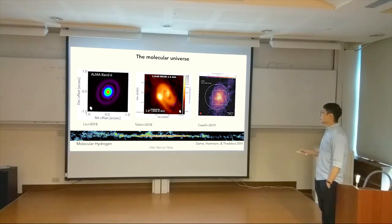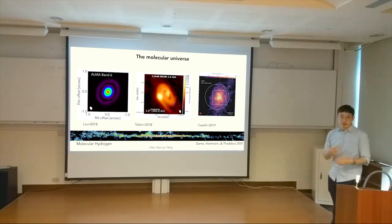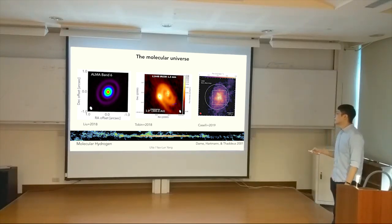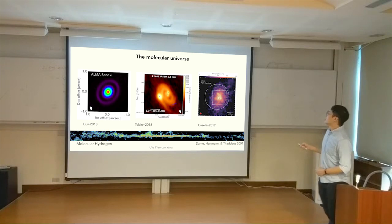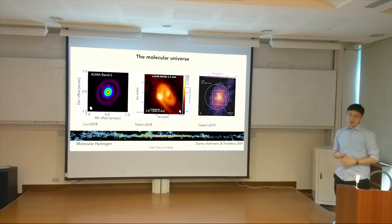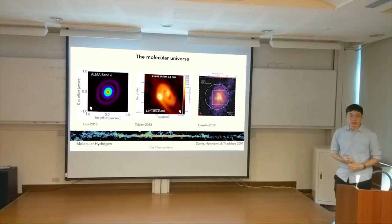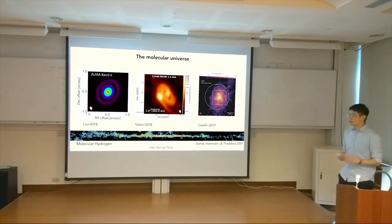We started to see more structure in more embedded sources - going back in time from left to right. In a more embedded source you can see a thicker disk and the image is a little blurry, mainly because there's more material around the source. This is the embedded protostar stage. Going back further in time to the pre-stellar stage, this is the famous source L1544, believed to be approaching the onset of star formation. We have this gallery of sources and we're trying to figure out how to connect them both physically and chemically.